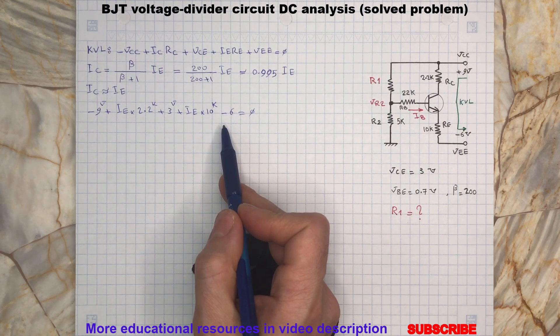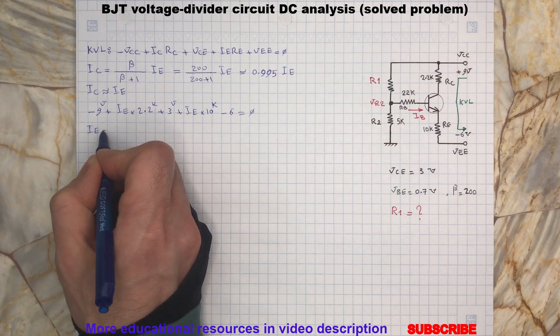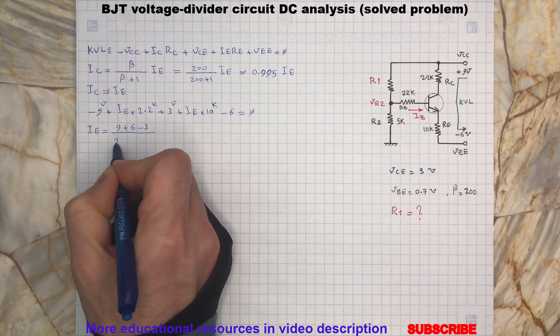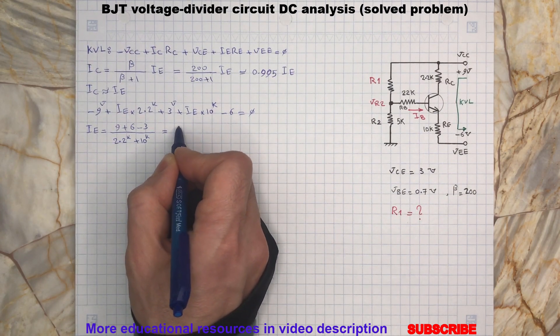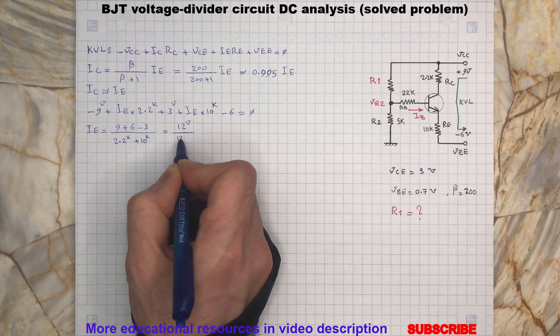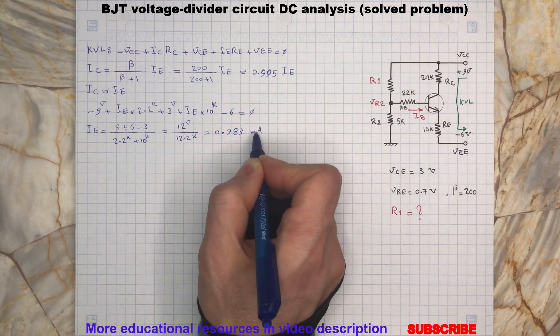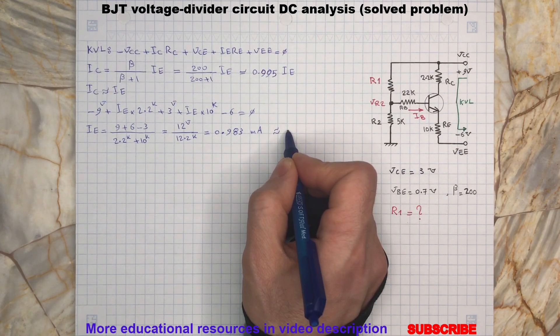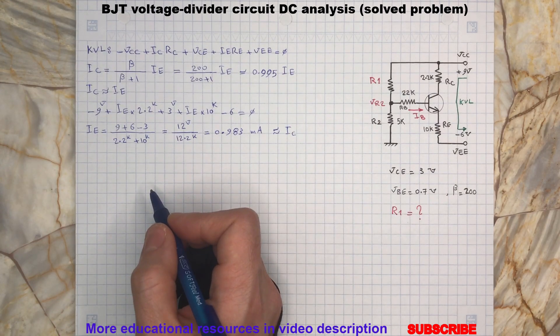And from this expression we can find the emitter current, which is also equals to IC collector current. So the emitter voltage will be...